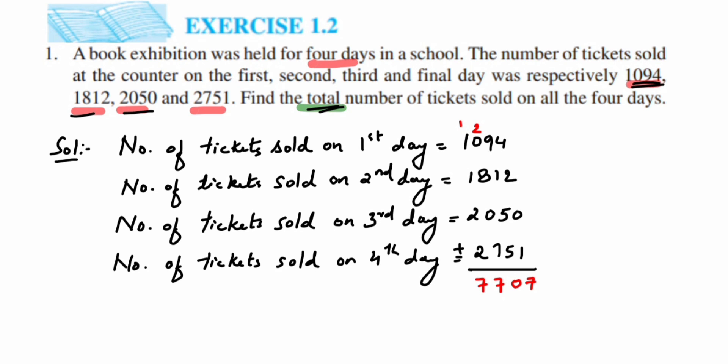Therefore, we can just conclude the answer. Therefore, 7707 tickets were sold on all four days. This will be the conclusion.